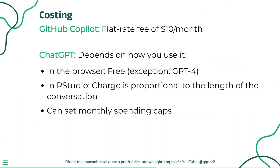A large difference between these two tools is the cost. GitHub Copilot has a fixed cost of $10 per month as an individual, whereas the cost for using ChatGPT depends on a lot of different factors. You can use it from the browser for free, but using it from within RStudio will cost money.